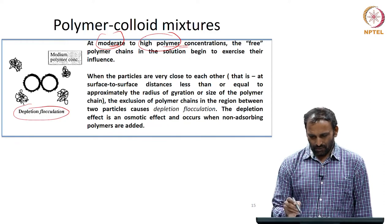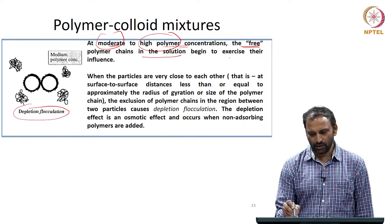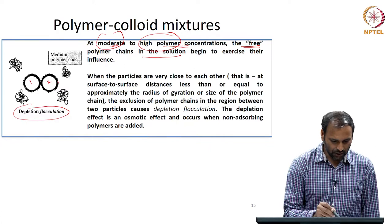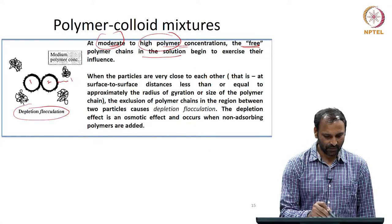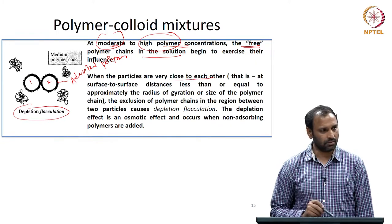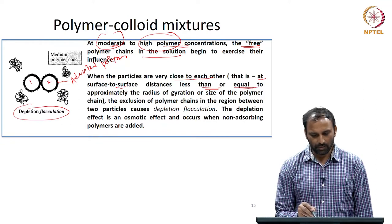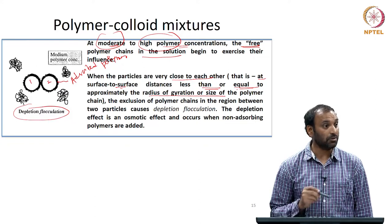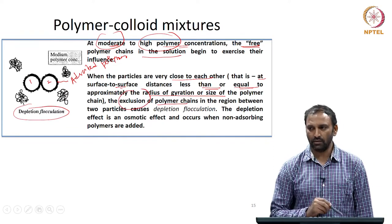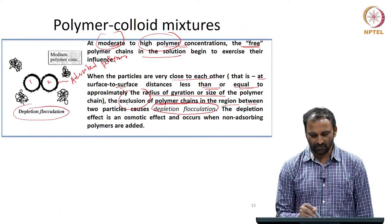Looking at this cartoon, particle 1 and particle 2 are shown. The dark region you see is the polymer that is adsorbed — that is the adsorbed polymer. When the particles are very close to each other, at a surface-to-surface distance less than or equal to approximately the radius of gyration or the size of the polymers, the polymer chains are excluded from the region between the two particles. That results in something called depletion flocculation.